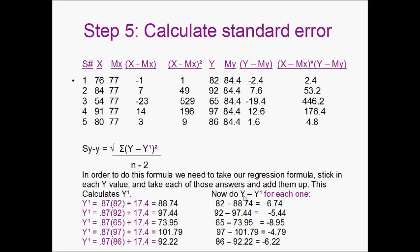For Y, we have 82, and the answer in the equation was 88.74. So we're going to subtract the 88.74 from the original 82, and we're going to get an answer. We're going to do the same thing for the 92, 92 minus 97.44, 65 minus 73.95, and so on.